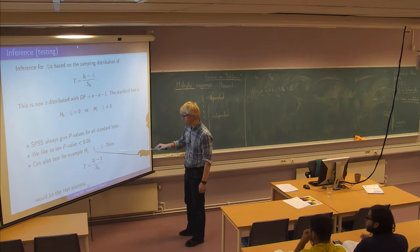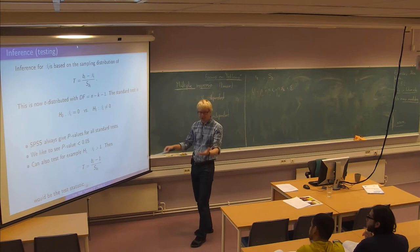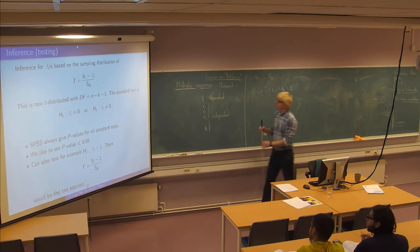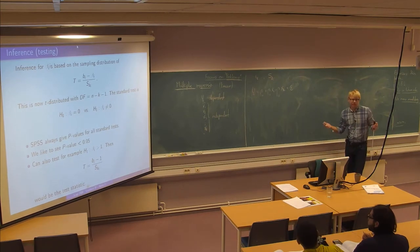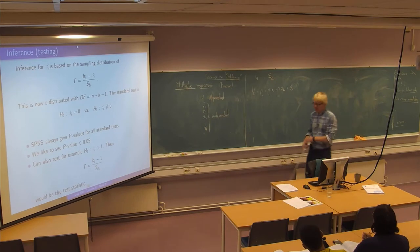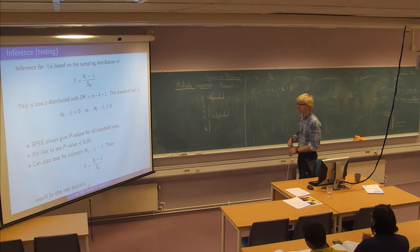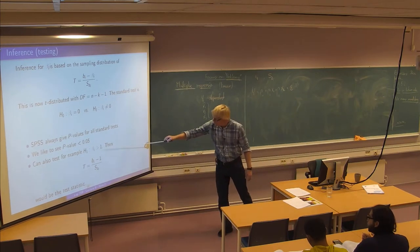For instance beta i, it could be relevant to test whether it's greater than 1 or equal to 1 or something. So you should remember that these coefficients, they will normally have some economic interpretations. So it could be price elasticities for one thing or any other economic quantity. And it might be relevant to test any claim value for them.